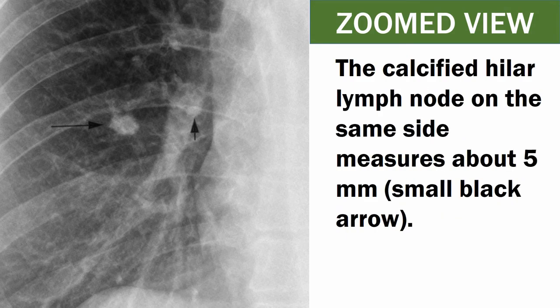The calcified hyaline lymph node on the same side measures about 5 millimeters, which is shown with a small black arrow.